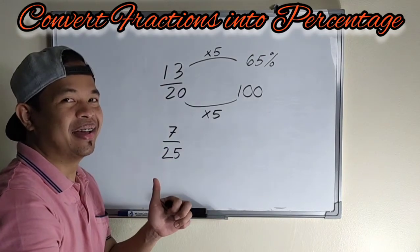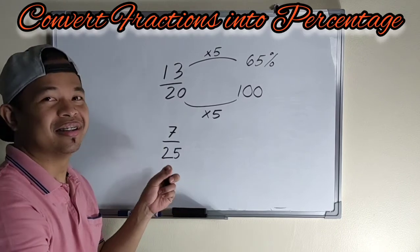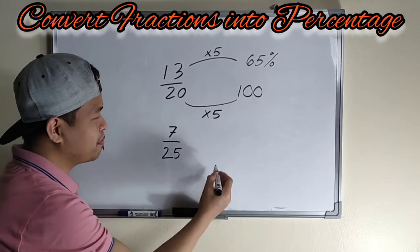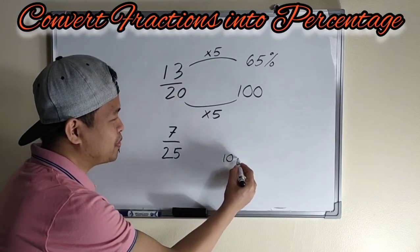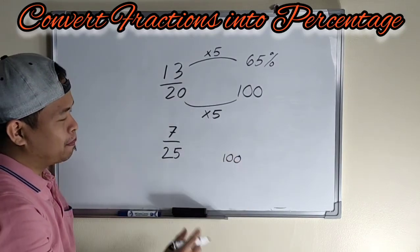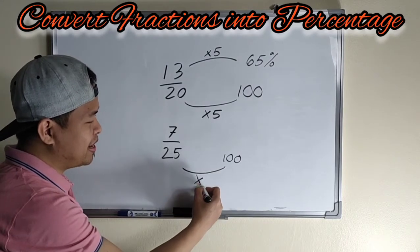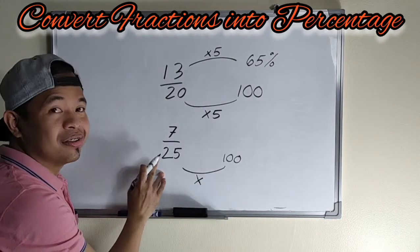Mandali lang po ba? So sagutan natin to. Another example. So 7 over 25, we will use 100.